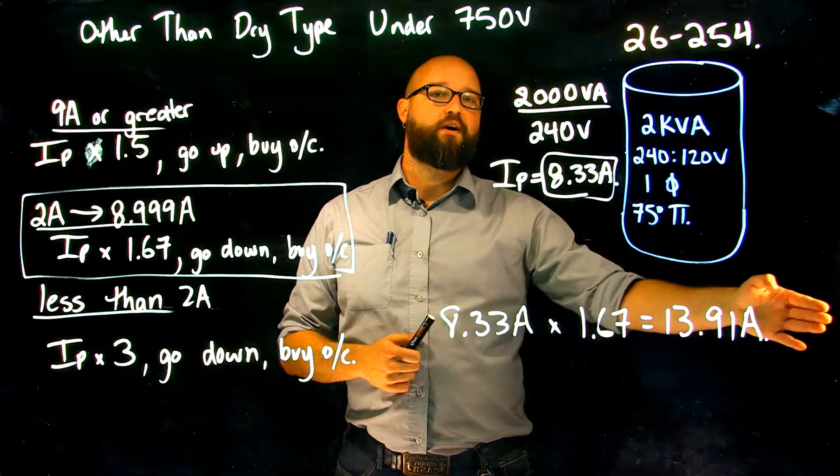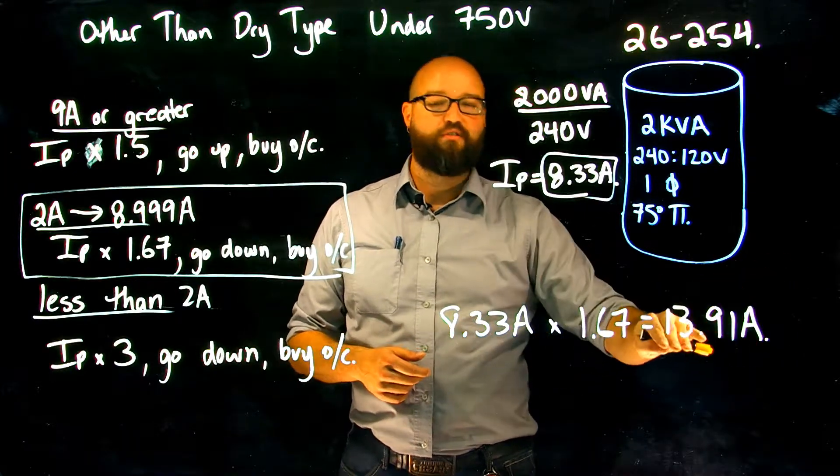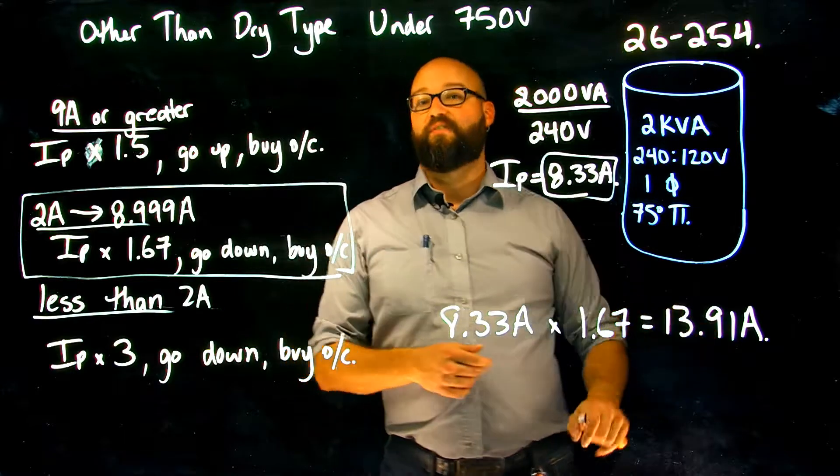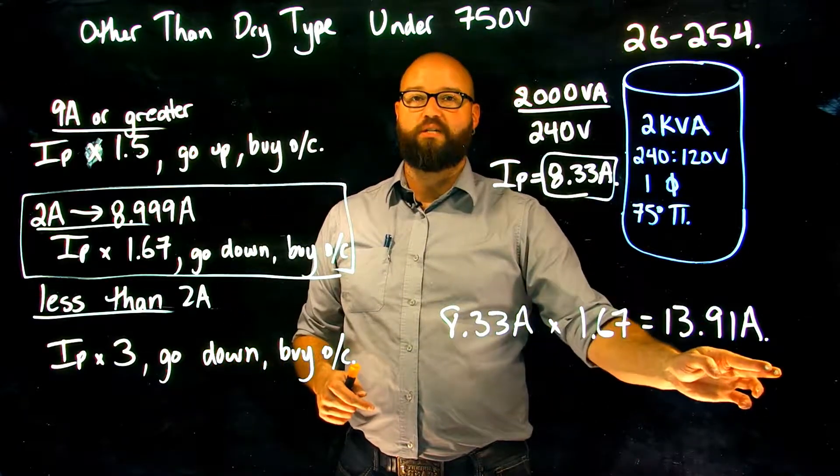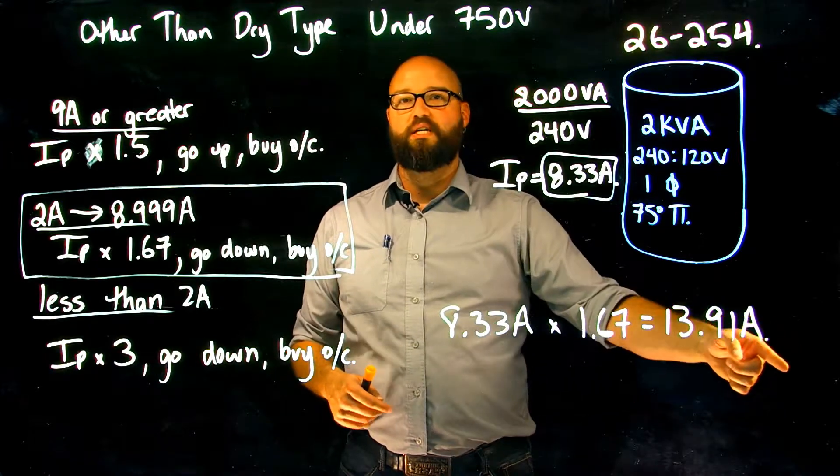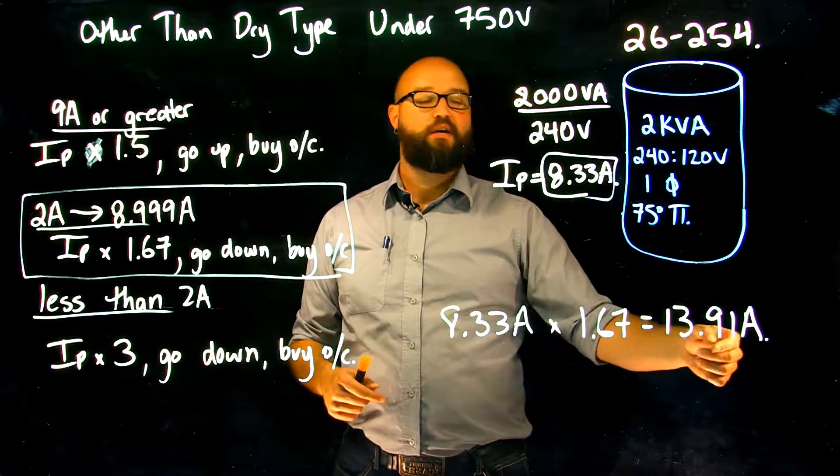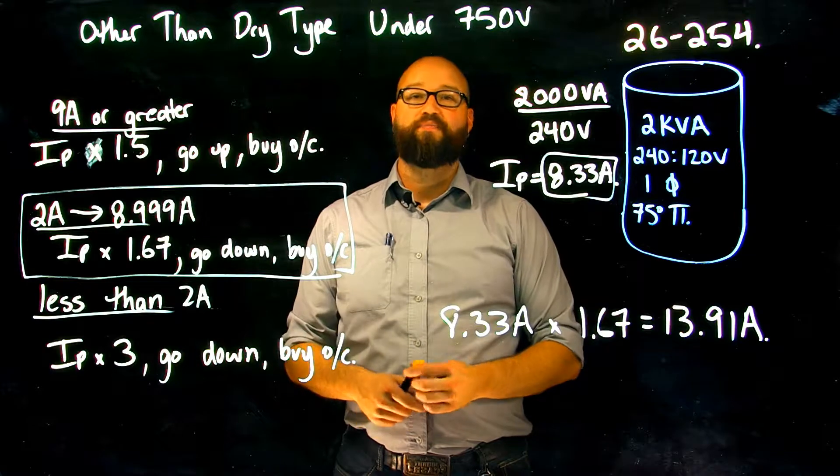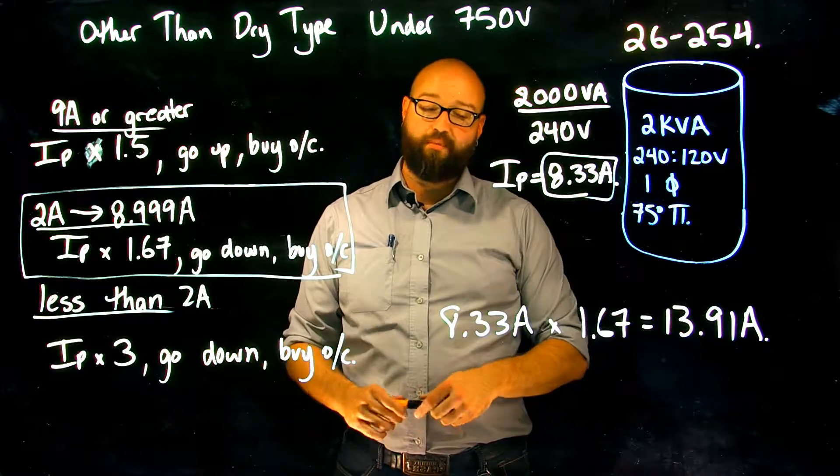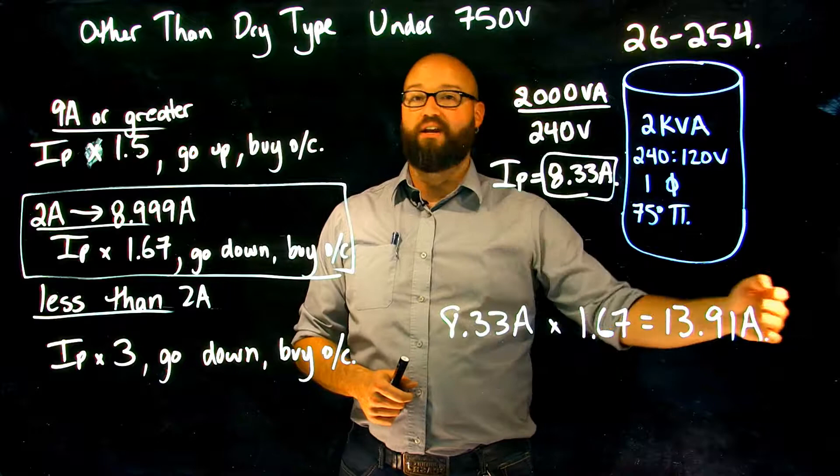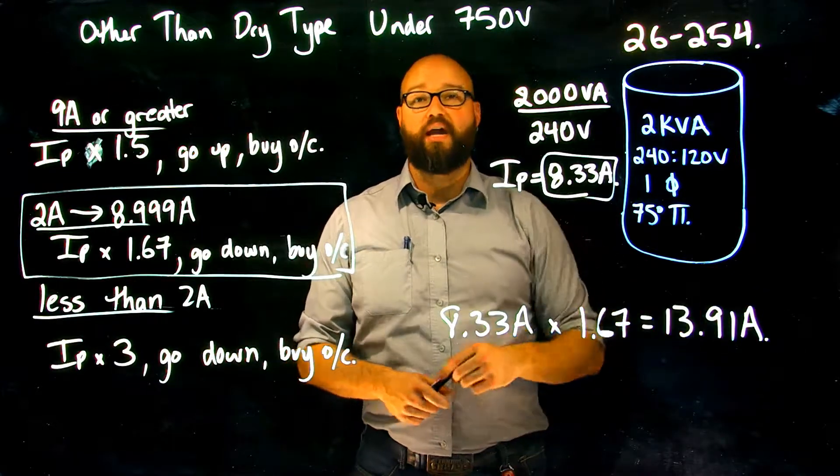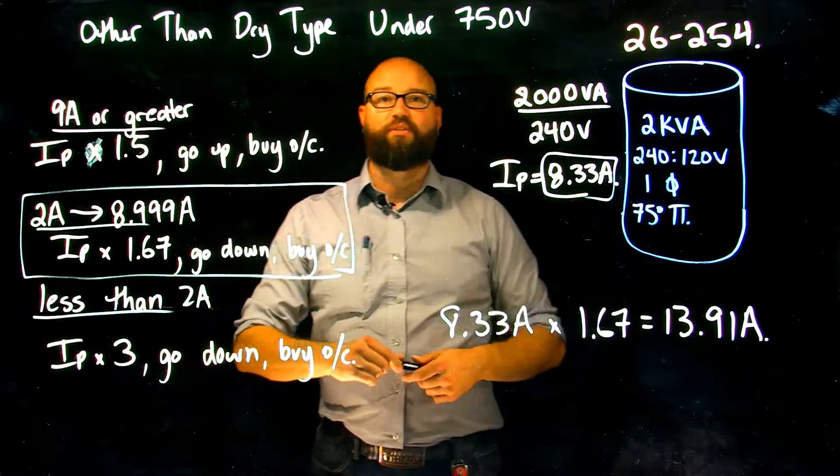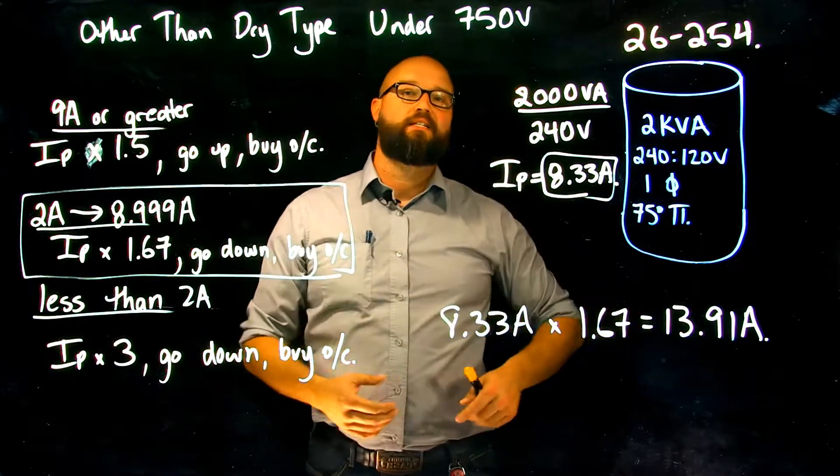If it was one amp increments, I would have a choice between 13 and 14. Again, if I went up to 14 I would exceed 167 percent, so I would go down to 13. If it was five amp increments, I would have a choice between 10 and 15 amps, and I would have to again go down to the 10 amp. And so on we could keep going with different increments, but the idea is whatever the increments are, pick the one that's underneath the 167 rating.